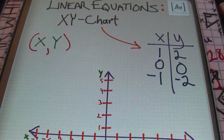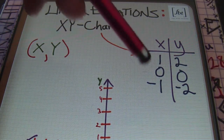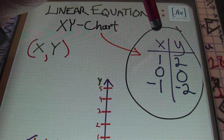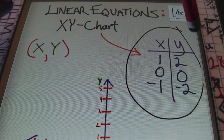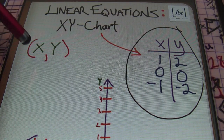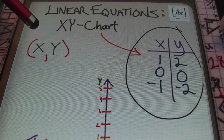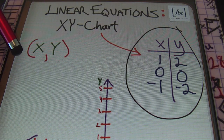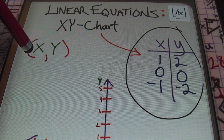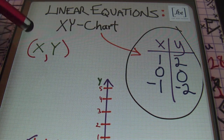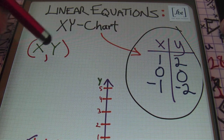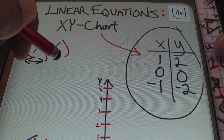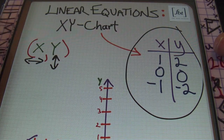When dealing with linear equations, I can use an XY chart in order to graph it. Here is a diagram of an XY chart — my X values are to the left and my Y values to the right. Each pair of numbers is an ordered pair. Anytime you're graphing lines — plotting on an XY axis, the rectangular coordinate system, or the Cartesian plane, which are all the same thing — every point is defined by an X and a Y value. Your X value goes left to right and your Y value goes up and down.